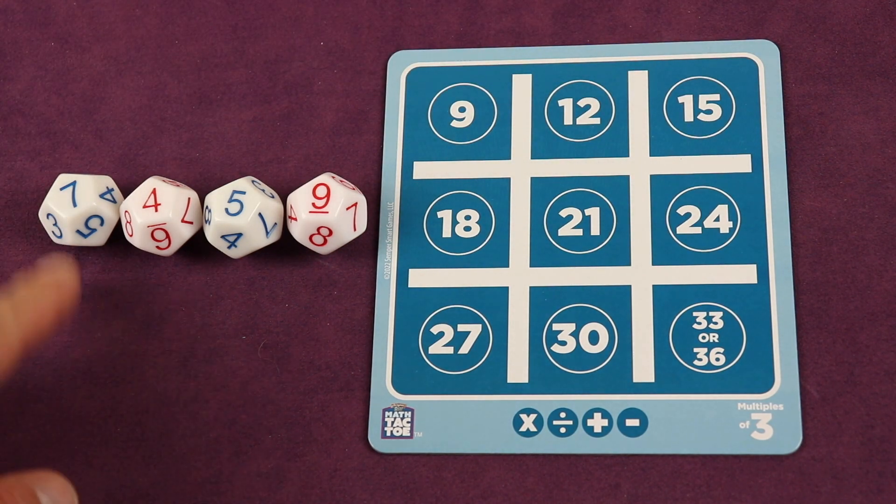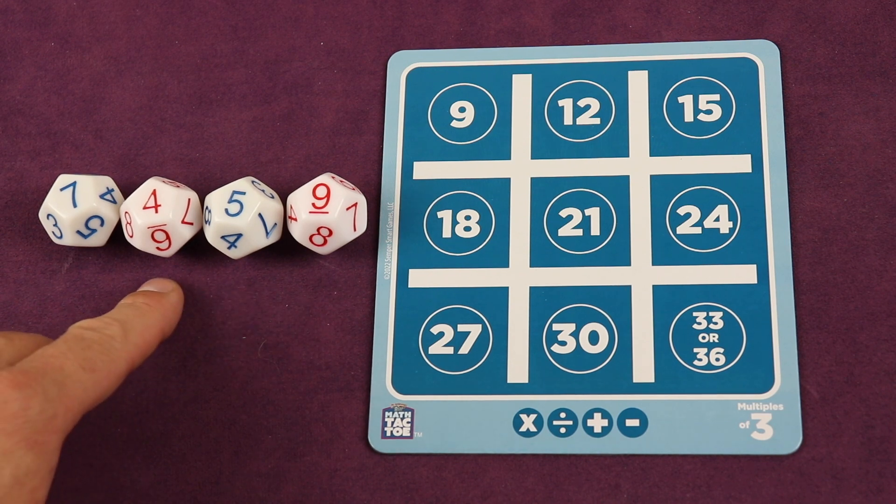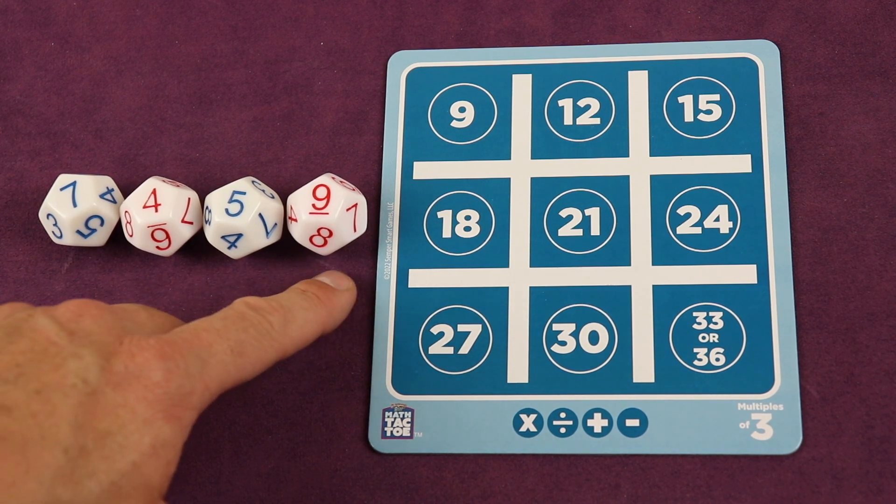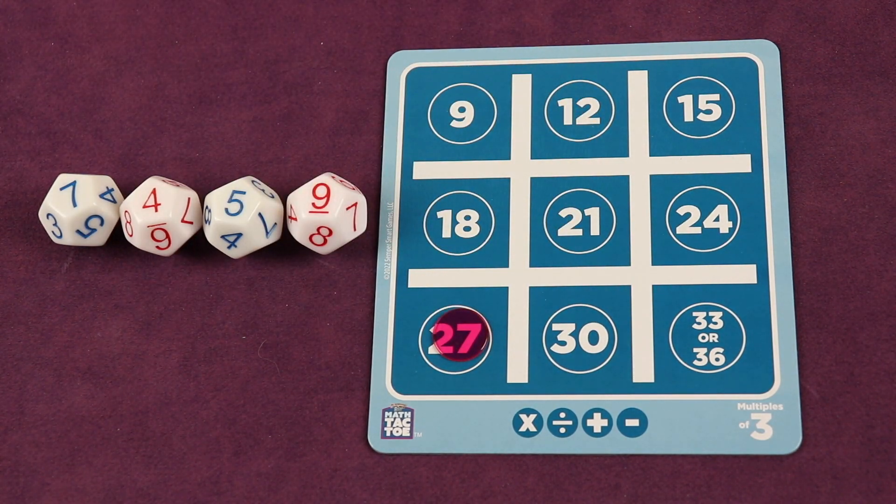How about this tricky one: seven plus five, so we have twelve, divide it by four which is three, three times nine is twenty-seven, and we could go there. So again that's just showing you the flexibility of this.